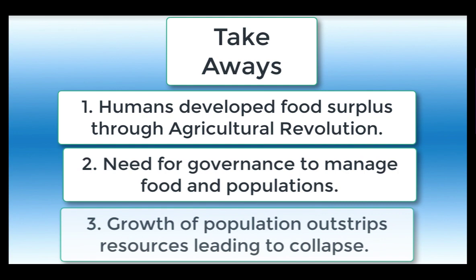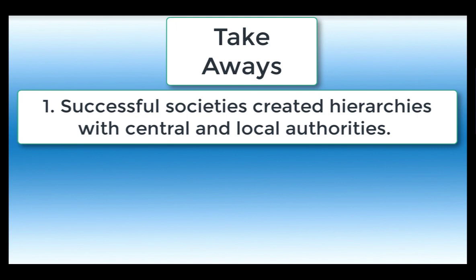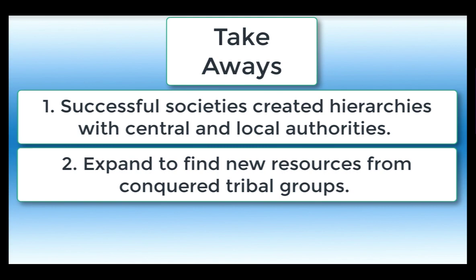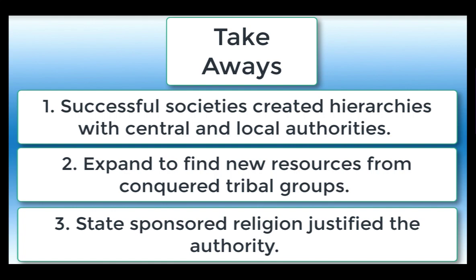Eventually, that growing population tends to outstrip local resources, leading to environmental collapse. However, notice that some societies escape this narrative — societies like the Aztecs and Incas. How? Number one, they created an empire with a governing hierarchy that looked out for local needs, with a central emperor but also local leaders. Number two, they expanded and found new resources using a military. Number three, they used a state-sponsored religious system to justify their actions and assimilate people into the system. This demonstrates how people in these early societies organized themselves politically to provide food for a growing population and succeed against really harsh environments.